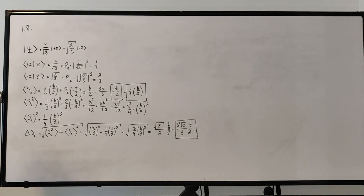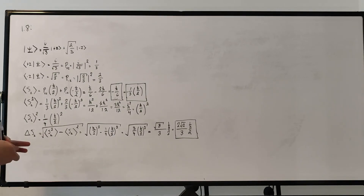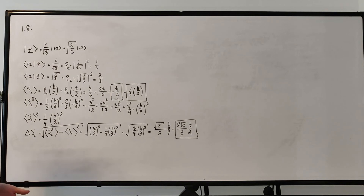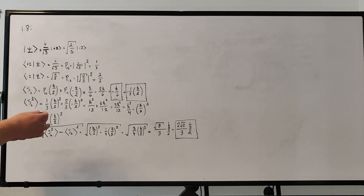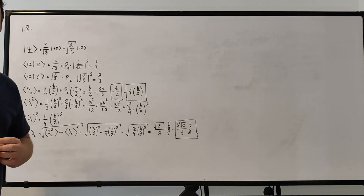Alright, that is problem 1.8. It's pretty simple — nothing we haven't done before. Just more practice calculating expectation values and uncertainties, and getting familiar with the mathematics of bra-ket notation. Thank you for watching. If you have any questions, let me know in the comments below. I'll see you on problem 1.9.